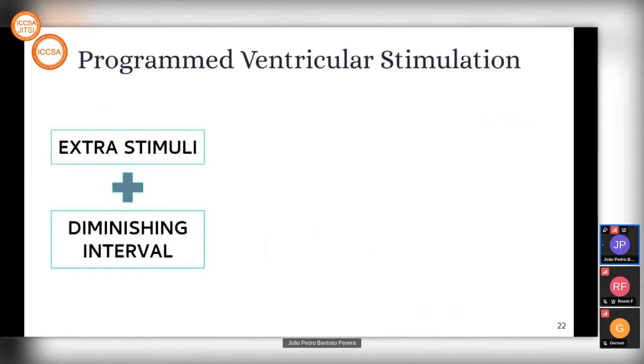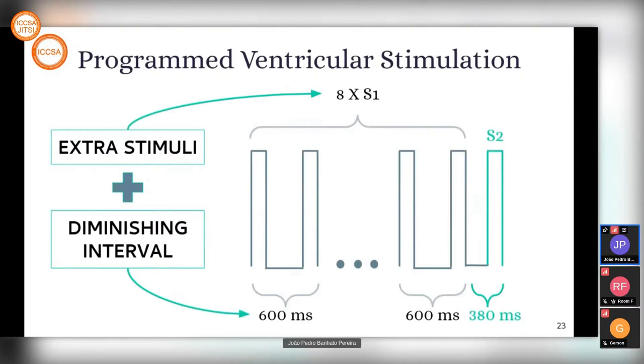Our programmed ventricular stimulation protocol consists of two main factors. Our main goal is to stress the heart to check the arrhythmic risk. We do that by applying extra stimuli and diminishing intervals between those stimuli. In our protocol, we call the stimuli S1, S2, S3, and so on, with intervals between them.